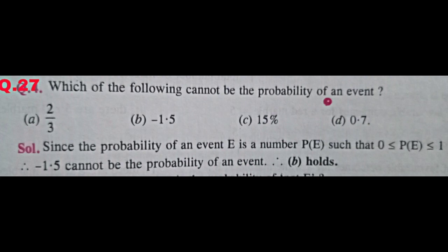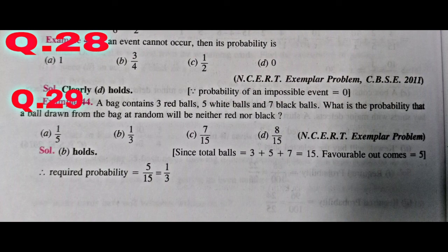Question number 27. Which of the following can't be the probability of an event? We know that any event's probability lies between 0 and 1. So minus 1.5 cannot be the probability of any event, because it is outside the range 0 to 1. Question number 28. An event cannot occur, then its probability is 0. Because the probability of an impossible event is always 0. So D is the correct answer.